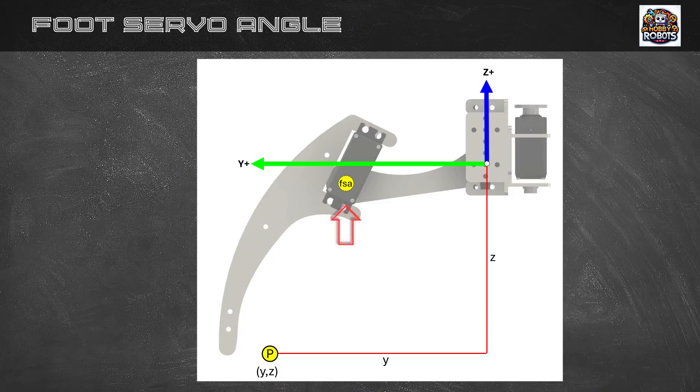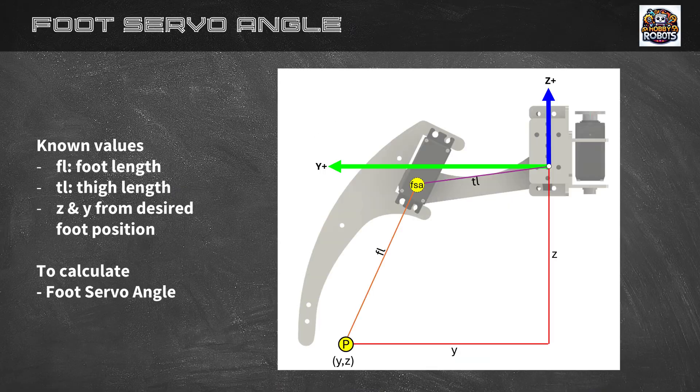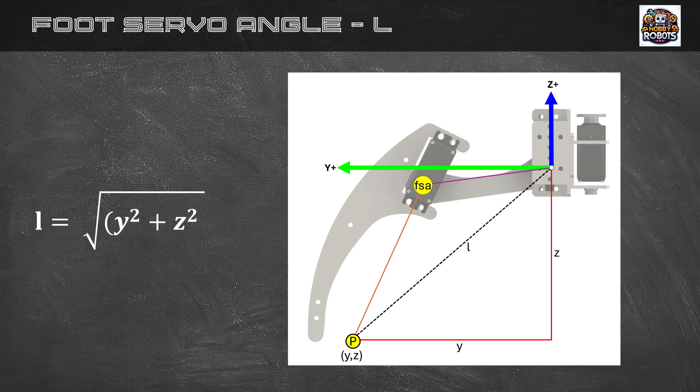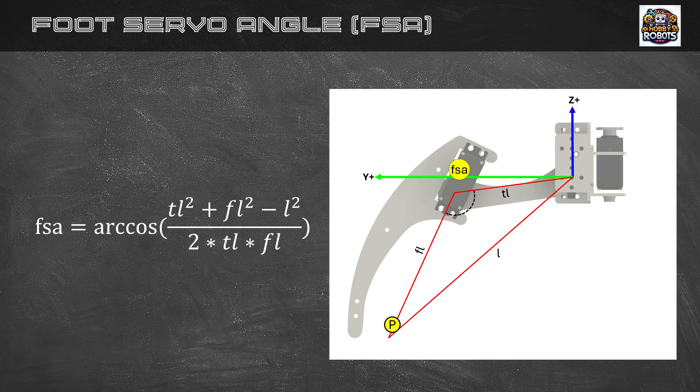To start with we want to calculate the angle of the foot servo. We have already measured the constant for physical size of the leg as the foot length and the thigh length. Based on our desired position of the foot we now know the y and the z value. I know I told you that foot positions are calculated from the center of the robot, but for now let's just assume the center of the coordinate system is at the center of the knee servo. The first thing we do is to calculate the length of L using the simple triangle math I described earlier. So now we have a triangle where we know all three lengths and we can use the formulas to calculate any of the angles. So let's calculate the angle of the foot servo.